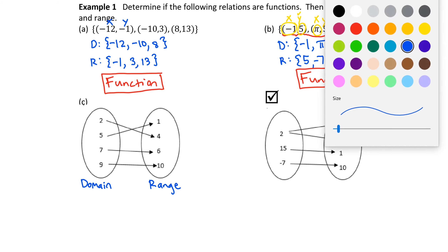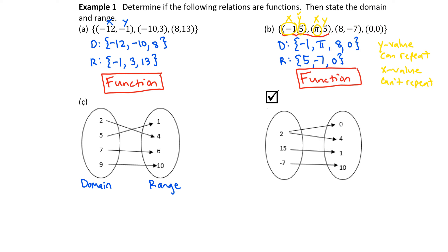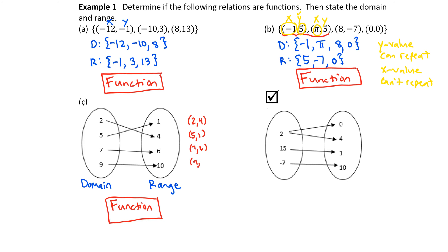Is this a function? Does every domain value have exactly one y value? Yes, there is a unique one-to-one pairing, so this is a function. We could rewrite each of those as ordered pairs: (2, 4), (5, 1), (7, 6), and (9, 10). So really, it's just another type of presentation of a function.